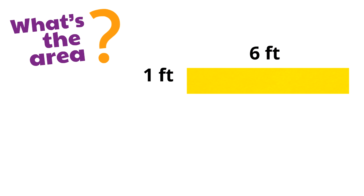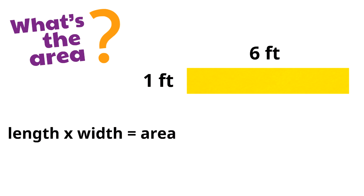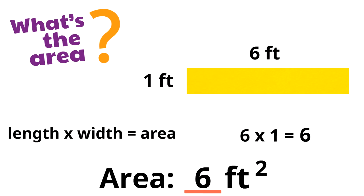Let's say we want to find the area of this rectangle. It is 6 feet long and 1 foot wide. Remember, to find the area of a square or a rectangle, all we have to do is multiply the length times the width — the length times the width is the area. It's just simple multiplication. So we would write 6 times 1. What is 6 times 1? 6 times 1 is 6. Whenever you multiply a number times 1, it stays the same. So our answer is 6 feet squared. That little 2 next to feet means squared. It tells us that the rectangle has 6 square feet of space inside. The area is 6 feet squared.